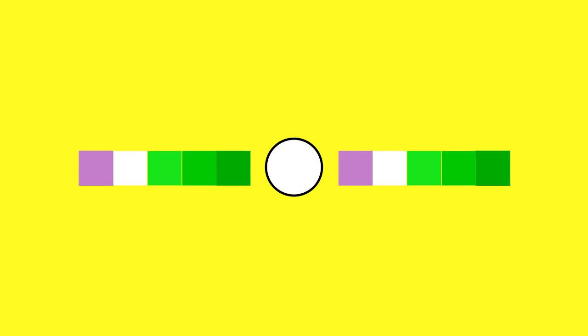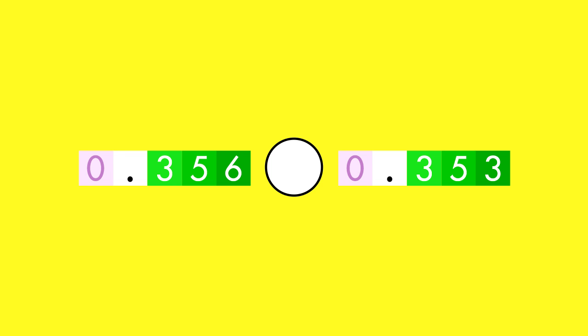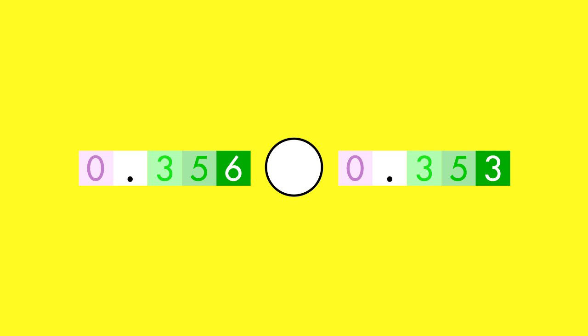To compare decimal numbers, look at the digits from left to right. In these numbers, the digits in the ones place are the same. The digits in the tenths place are also the same. The digits in the hundredths place are the same. The digit in the thousandths place in the first number is greater than the digit in the thousandths place in the second number, so the first number is greater.